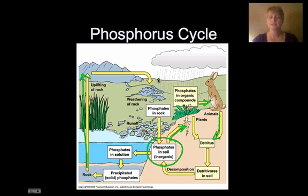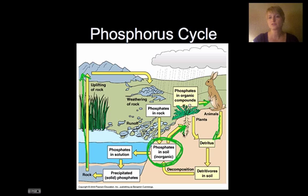There are a lot of phosphates in the soil, so the quicker part of the phosphorus cycle is as it goes from the soil to the plants to the animals and then back to the soil from decaying animal and plant matter.